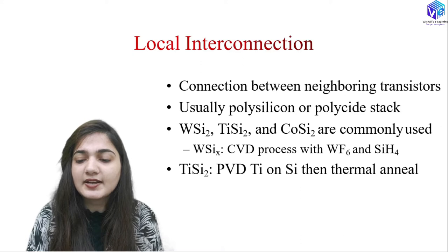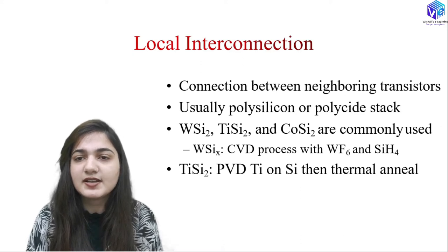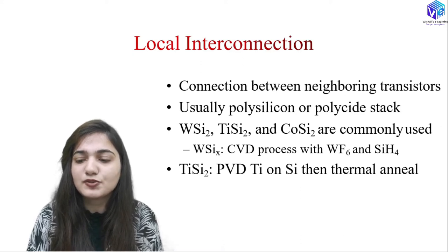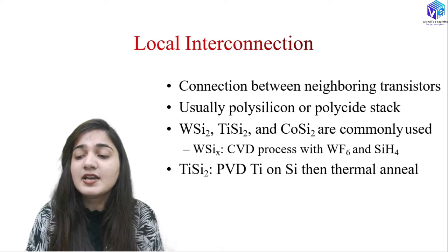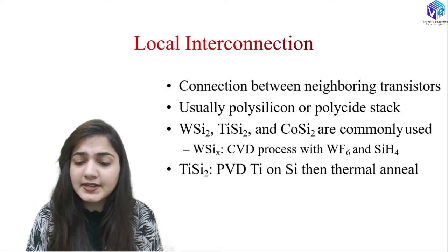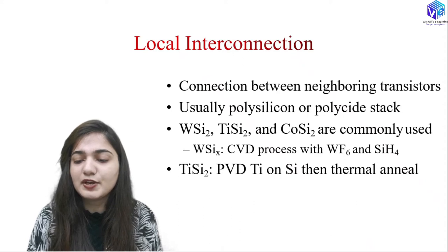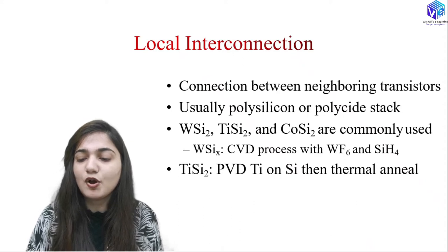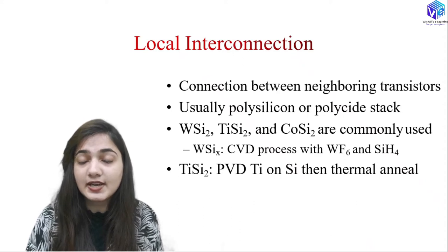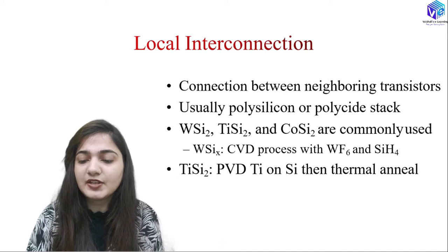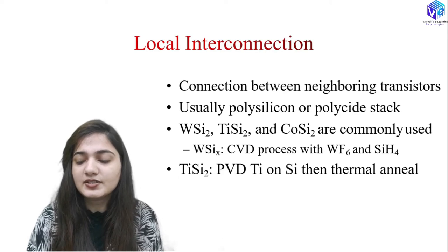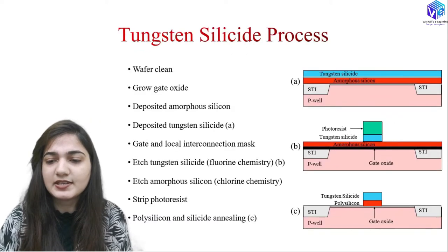Tungsten silicide can be deposited with the CVD process using tungsten hexafluoride and silane. Titanium silicide is deposited with PVD of titanium on silicon followed by thermal annealing. With the help of thermal annealing, titanium reacts with the silicon to form the silicide.